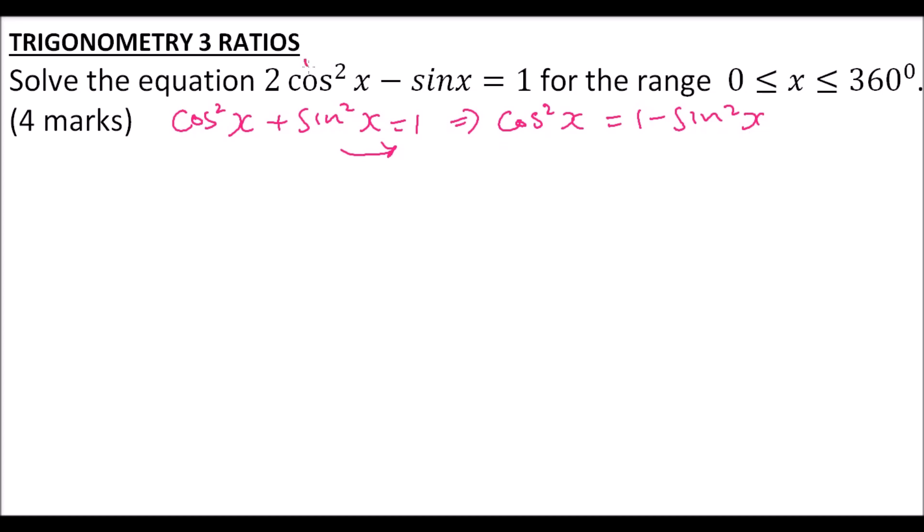We can now replace cos²x with this so that we have one unknown, which is sinx. We write 2(1 - sin²x) - sinx and bring 1 to this side, equals to 0.